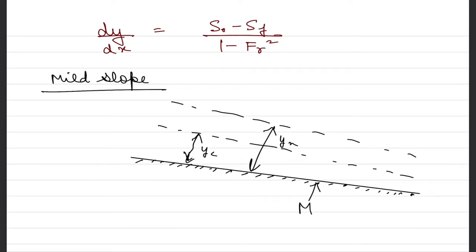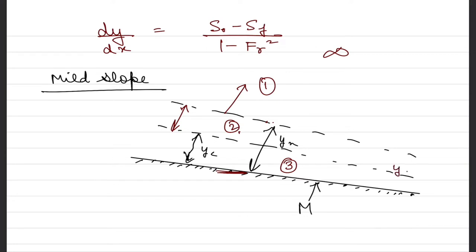We can divide the flow space into three regions. Region one is anything above the normal depth all the way to infinity. Region two is between the critical depth yc and normal depth yn. Region three is between the channel bed and the critical depth line. Whatever profile develops in region one is called M1, in region two it is M2, and in region three it is M3.